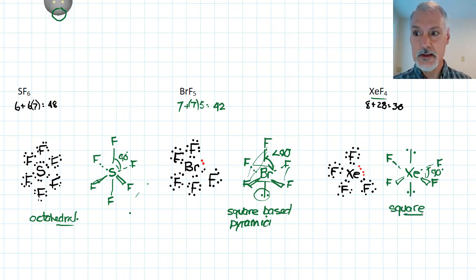So that brings to an end our look at expanded octets. We can go as high as five and six. I've yet to see seven or eight octets. But I don't want to put a limit on what science can come up with. But you're responsible for understanding that some molecules can exceed the octet rule. Thanks for watching.